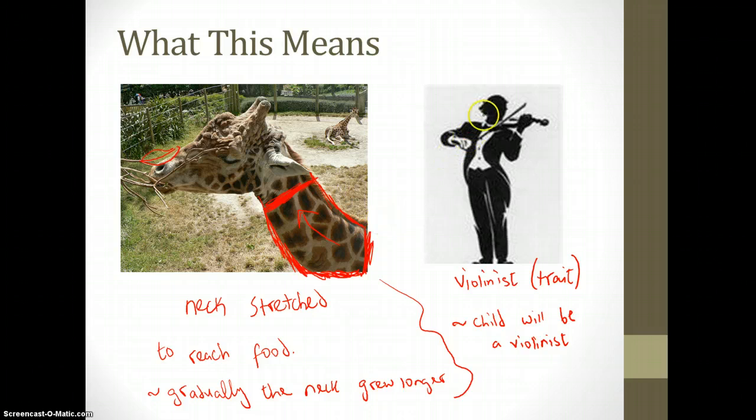What this means also is that here we have a violinist, a good violin player. Now if this person has a child, the child will have the natural ability to be a good violinist. He will successfully be a violinist. But if this child decides to not be a violinist, his child...